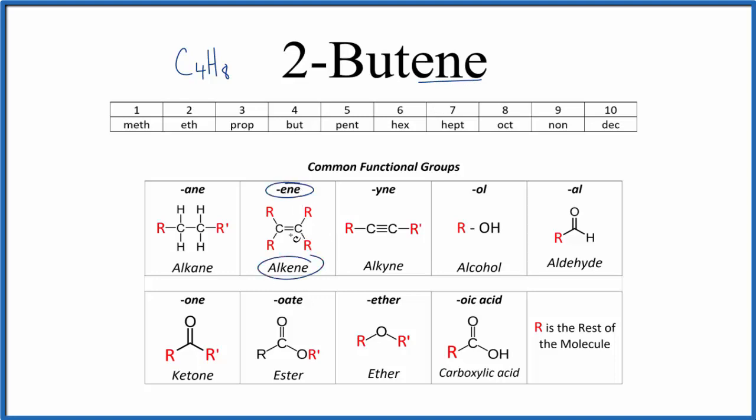That ends in E-N-E, and that means there's going to be a double bond between two of the carbons. The bute means we have four carbons. And then the two tells us where that double bond is going to be in the 2-butene molecule.